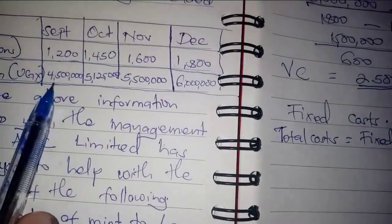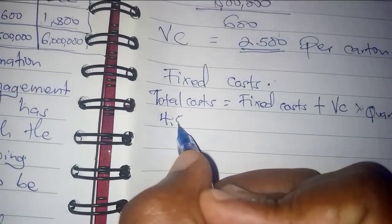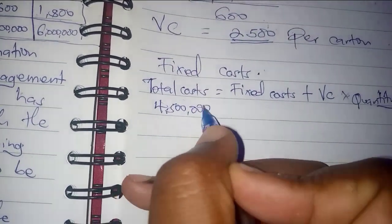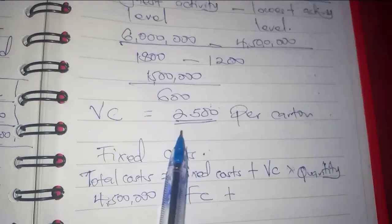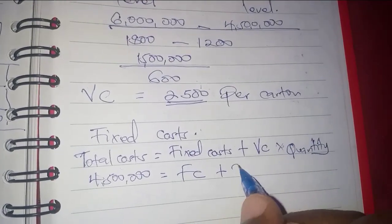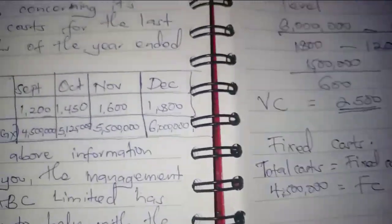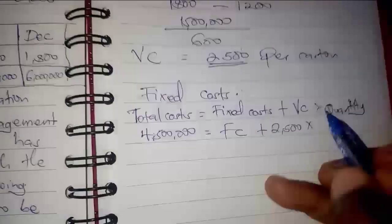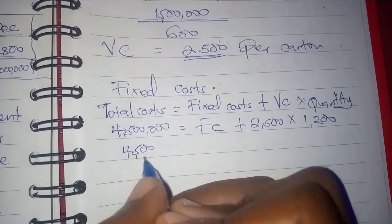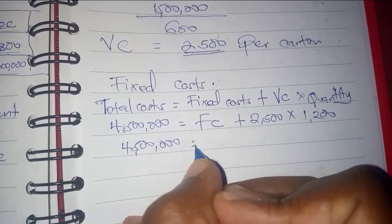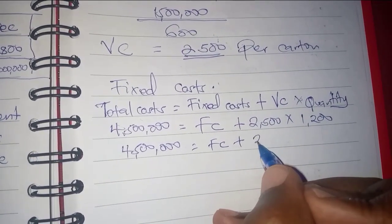The total cost of production for September is 4.5, which equals fixed costs — what we are looking for — plus the variable cost, which we already found: 2,500, times the quantity for that month, which is 1,200. So 4.5 equals fixed costs plus this times this, which is 3M.